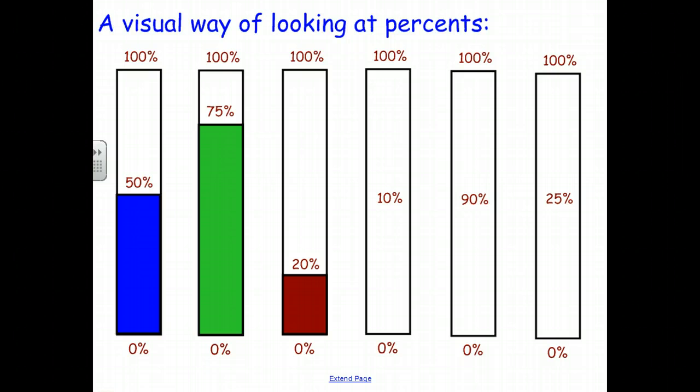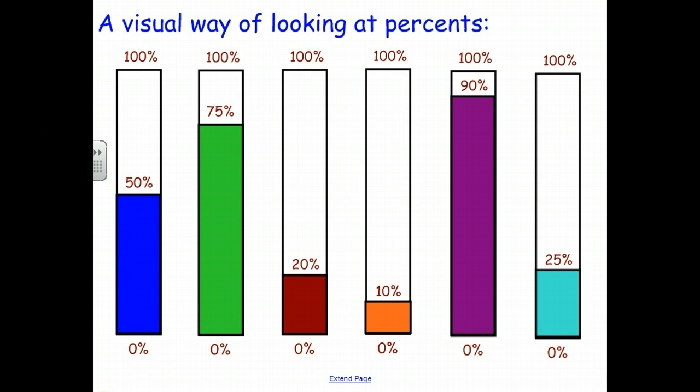Well, 10% is going to be very close to the bottom, about half as tall as 20%, somewhere around there. 90% is going to be somewhere up here. And 25% will be somewhere close to 20, but a little bit higher. So, your bars should look something like this. They don't have to look exactly like this. Again, these are all approximations because we're drawing approximate percents in a bar. But this is how we represent it. 90% is where 90 would be on a vertical number line from 0 to 100. And the same for 25, 10, and 20.